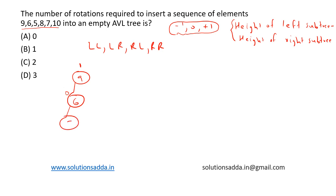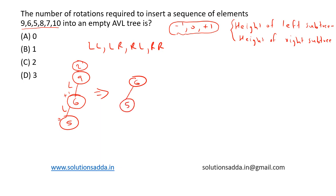Now we insert 5. Upon inserting 5, the balance factors all get changed. The balancing factor of 9 becomes 2, node 6 becomes plus 1, and node 5 is 0. The balance condition is violated. This happened because 5 was inserted in the left node of the left — an LL case. So we perform an LL rotation: we lift 6 up, move 5 to the left and 9 to the right. Now all three nodes have a balance factor of 0.